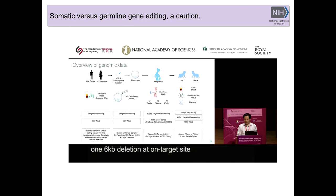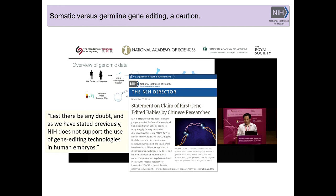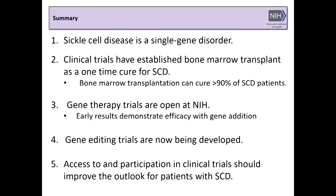A word about somatic versus germline editing: we're talking about somatic cell gene therapy and gene editing. In sickle cell disease, we have the benefit of being able to take out the diseased organ, change it — add a gene or correctly spell the gene — and put it back. We're not talking about germline gene editing, which is what all the fuss has been about recently, especially since a Chinese investigator reported doing germline gene editing in a set of twins. The NIH came out with a statement — Francis Collins' words: lest there be any doubt, NIH does not support the use of gene editing technologies in human embryos. Access to and participation in clinical trials should really improve the outlook for patients with sickle cell disease.